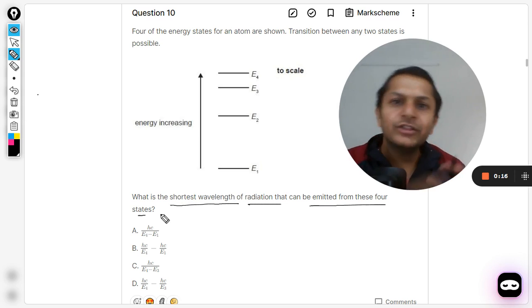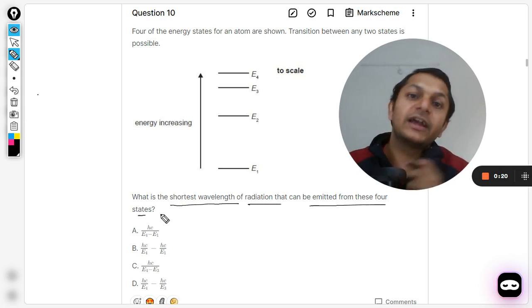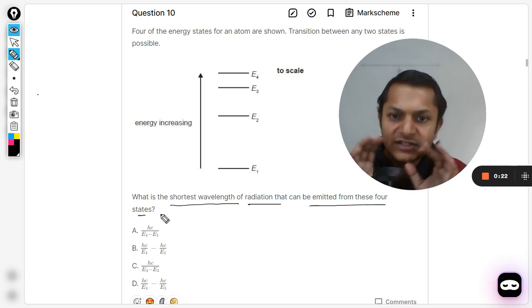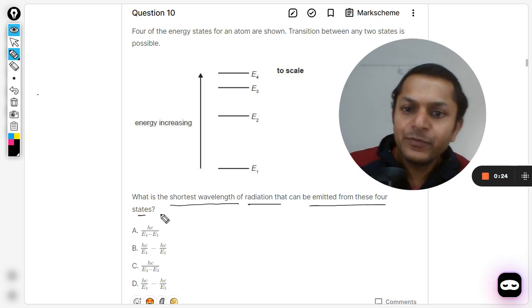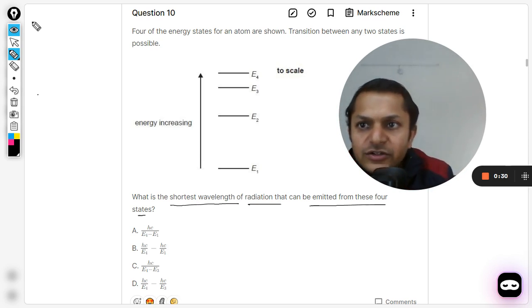On the surface it looks like a really very difficult question and students would be confused about how to do this. But do not worry about this, there is a method of doing it so that you can understand how to find the shortest wavelength and the longest wavelength.